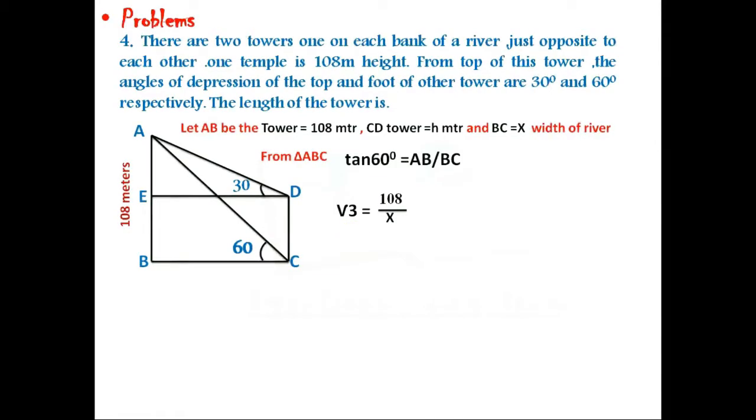From triangle ADE, tan 30° equals AE by DE. As we know, AE equals AB minus BE, that is 108 minus H, which is the height of the other tower.